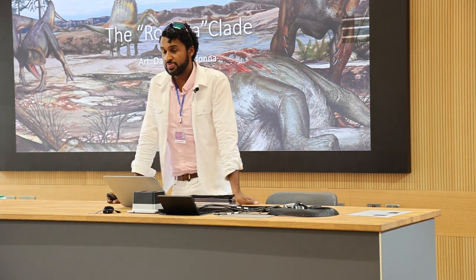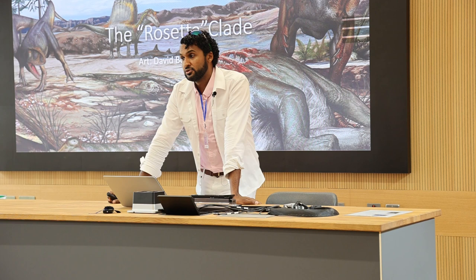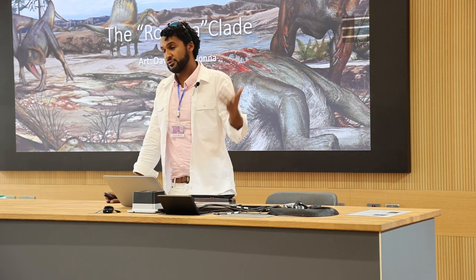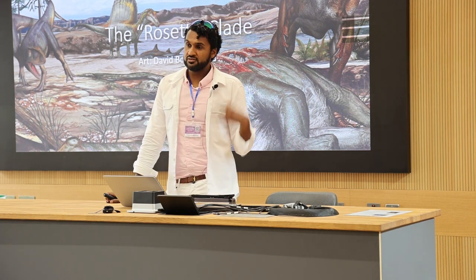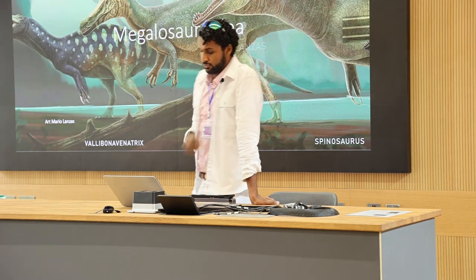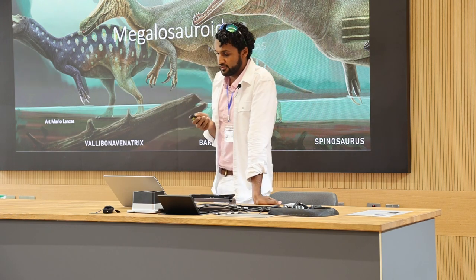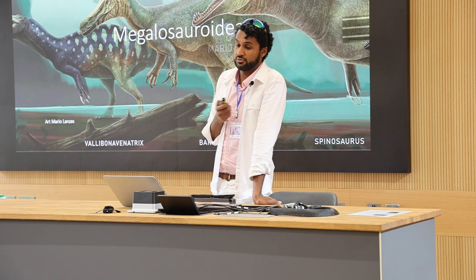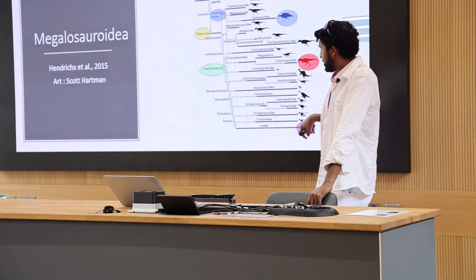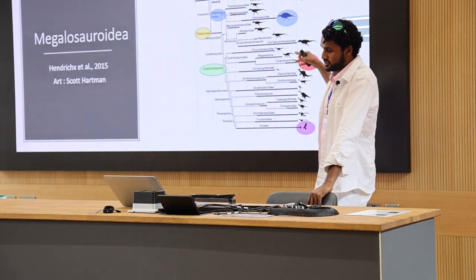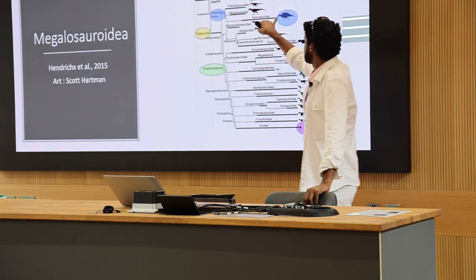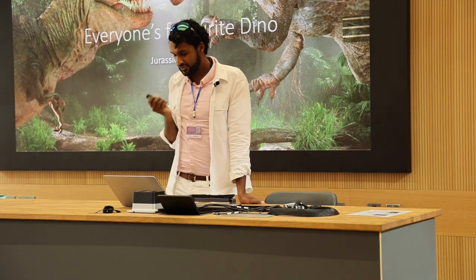This is a term I've coined: the Rosetta clade. The Rosetta Stone is a famous stone found in Egypt which had four languages on it, allowing archaeologists to decipher ancient Egyptian for the first time. This clade is called Megalosauridae, and it includes famous dinosaurs such as Spinosaurus and Baryonyx, and actually the first dinosaur ever discovered — Megalosaurus. Here is a theropod family tree: at the very bottom we have birds as living dinosaurs, then Tyrannosaurus rex, and not too distant from T-Rex, we have the Megalosauridae, including Spinosaurus.